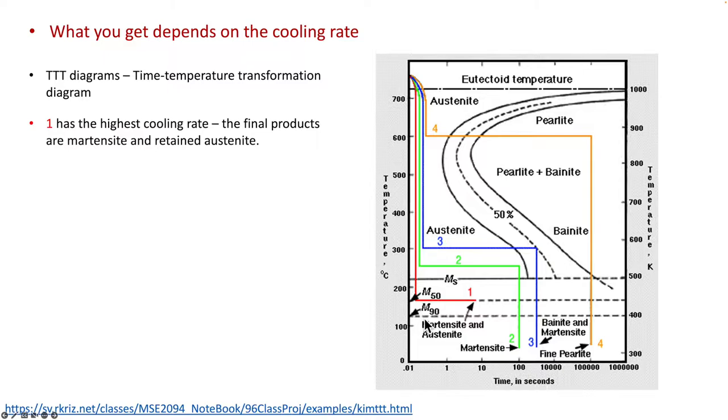Let's look at a few examples how to use TTT diagram to help us determine the final constituent of the steel. In the first case, the red curve, it goes straight down into temperature and it hits the m50 line and it remains at this temperature. What this tells us is the final microstructure is 50% martensite and 50% retained austenite.